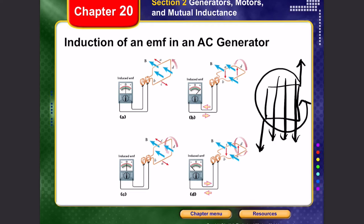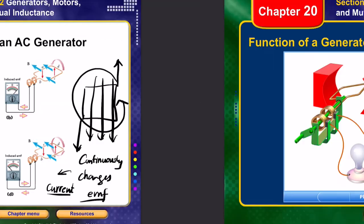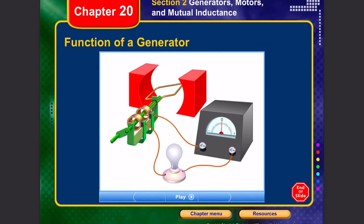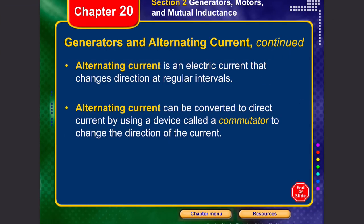The continuously changing EMF produces a continuously changing magnetic field, which in turn creates the induced current we use as electrical energy. This is the basic functionality of a generator, and the current produced is alternating current.